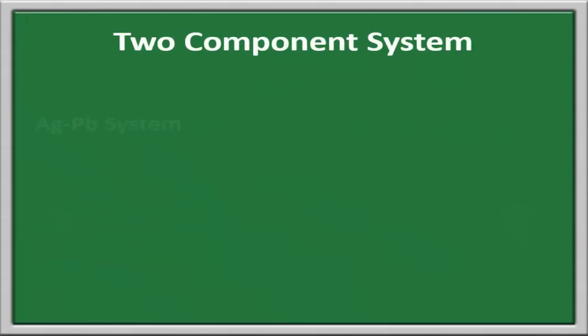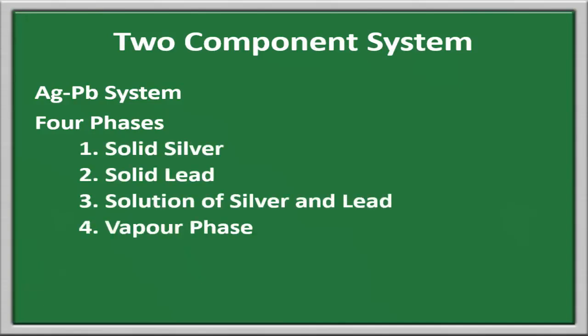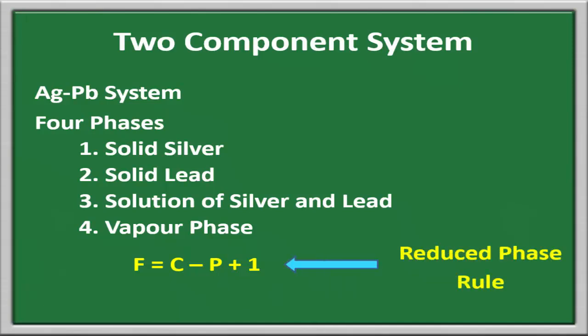Let us study the two-component system for the silver-lead system. When the alloy of silver and lead is formed, it contains four phases: solid silver, solid lead, a solution of silver and lead, and the vapor phase. However, whenever the alloy is formed, the vapor is present to a negligible extent and hence we neglect it. So the reduced phase rule, F = C - P + 1, is applied to this system.